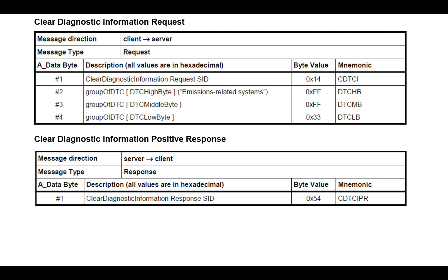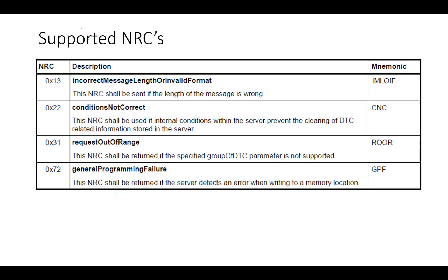The NRCs supported in this service are: 0x13 — Incorrect Message Length or Invalid Format; 0x22 — Conditions Not Correct; 0x31 — Request Out of Range; and 0x72 — General Programming Failure. This covers all regarding Service 0x14, Clear Diagnostic Information.